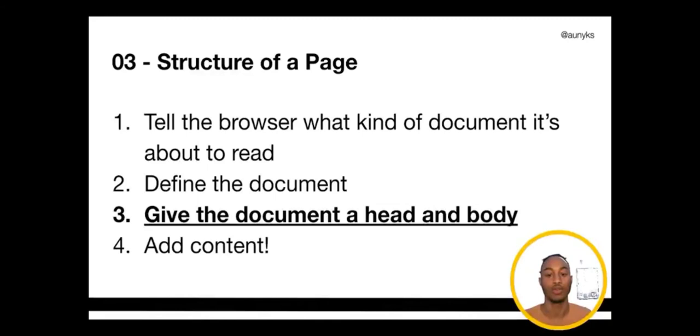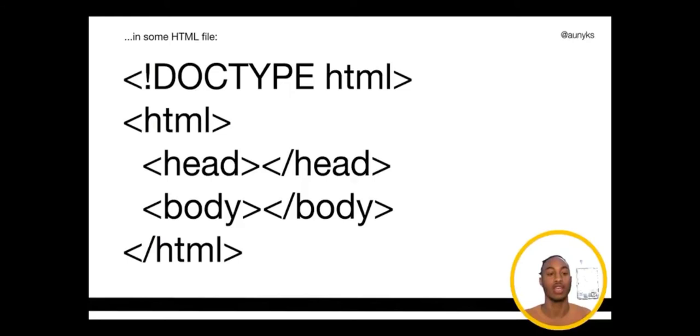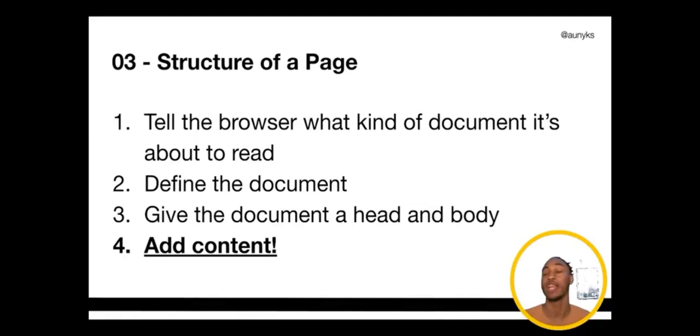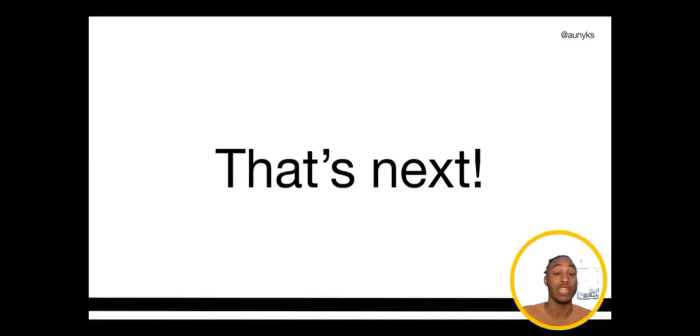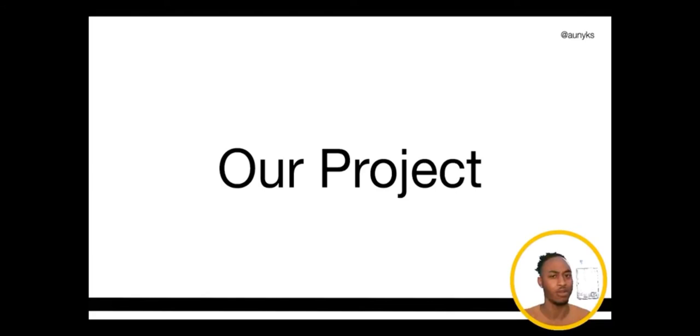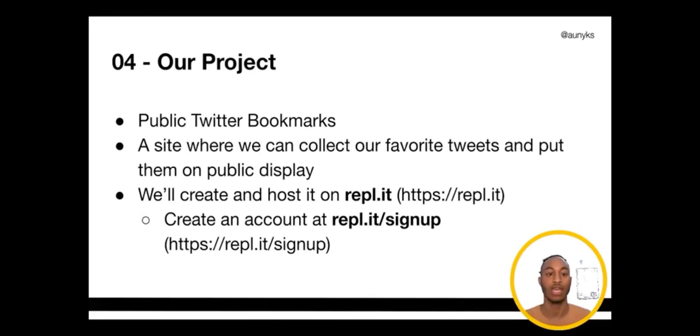Inside the html tags we add head and body tags — tags nested inside more tags. The head and body tags both open and close, defining our metadata and our actual visible data. In the body we describe anything that will be shown to the visitor. For our project — decided by a Twitter poll — we're going to make a website that collects favorite tweets and puts them on public display.